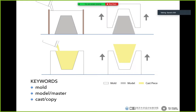So, keywords in molding and casting: we have molds, we have a model — also called a master — and then we have casts, also called a copy. If you take a look at this image, this gray object is the model. It is something you make. It's an original piece. You only have one of this piece.